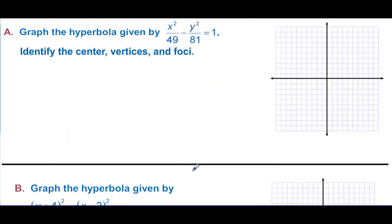Graph the hyperbola and identify the center, vertices, and focal points. The center is (0, 0), so we plot that. Then we go right and left seven units, because 49 is under the x. So we go right seven and left seven.